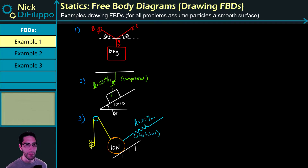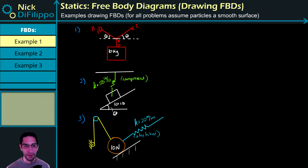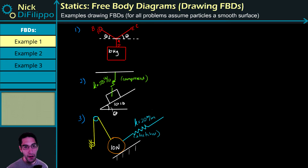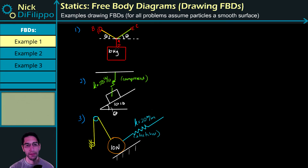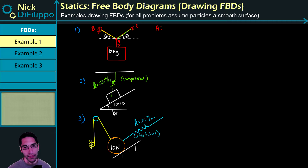These examples are all fairly typical of problems you may see in a statics class. In example one we have a block that is suspended from two different ropes — let me draw these ropes in different colors to show they are different. We have one rope here, another rope here, and a third rope that goes down, so three ropes suspending a 10-kilogram block. I want to draw two different free body diagrams: one of point A and one of block D.